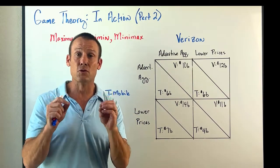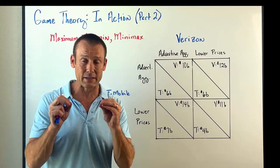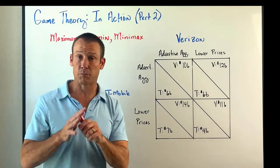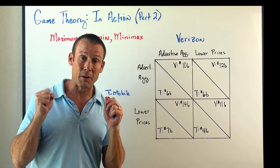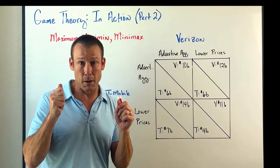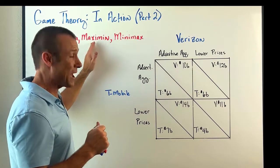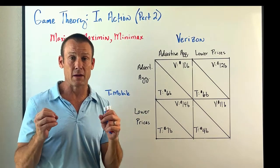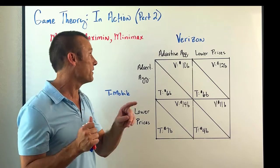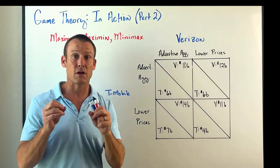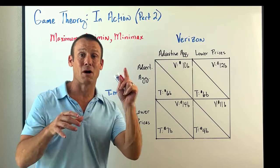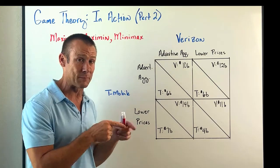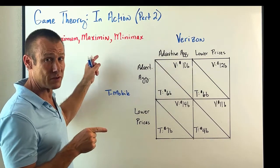We're going to learn some new stuff — new strategies that firms or individuals might take. The three strategies we'll focus on: first, the maximax strategy, where you go with the strategy that could give you the best possible outcome. Second, the maximin strategy, where you're trying to maximize the minimum outcome. Third, the minimax strategy, where you're trying to minimize the maximum of your opponent.